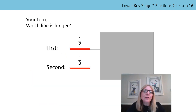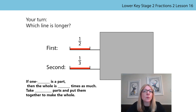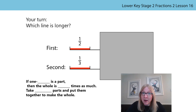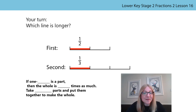Now it's your turn. Can you tell which line is longer? Try to visualize it — can you draw it? Use your pencil and ruler to draw what you think the two lines will look like when the box is removed. Remember the stem sentence we've been using. Pause the video and have a go. Are you back? Did you use the stem sentence to help you? First line: if one half is a part, then the whole is two times as much — take two parts and put them together. Second line: if one third is a part, then the whole is three times as much — take three parts and put them together. Did your lines look like this? Great job!